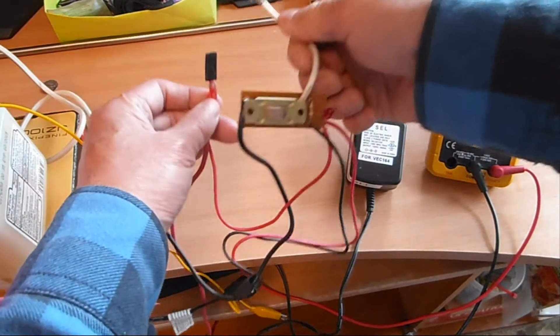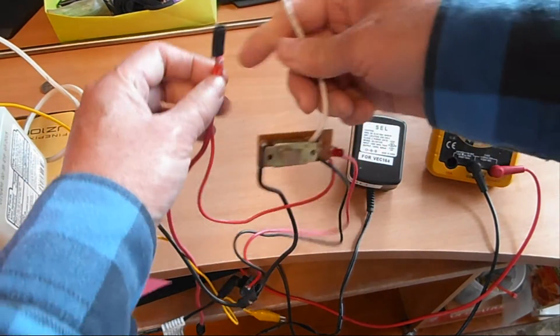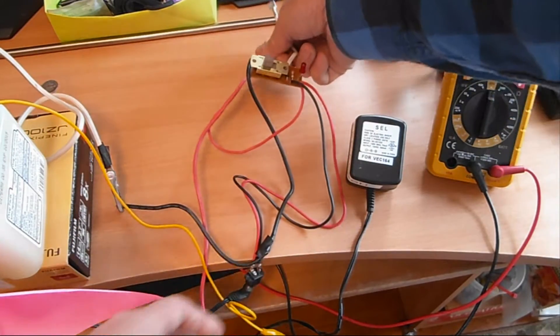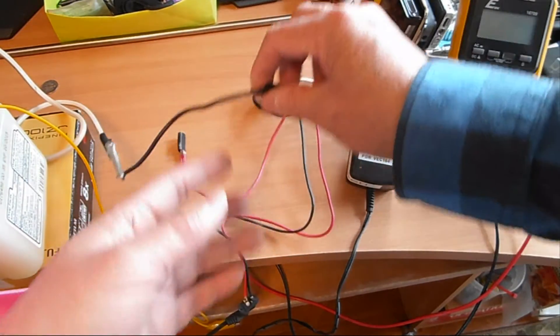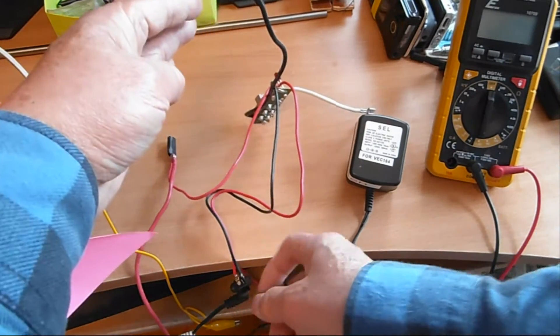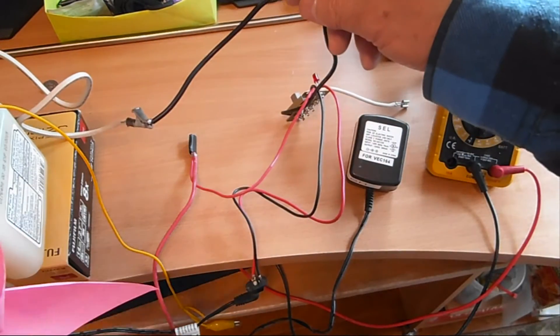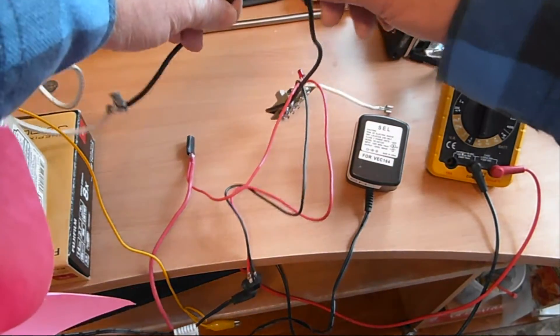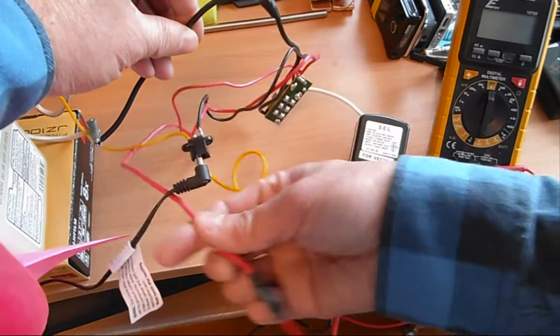So you have two wires here that connect to the battery and you have two wires here that connect to your motor. One here and the other one here.